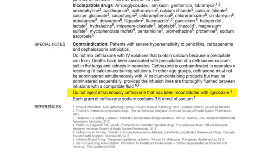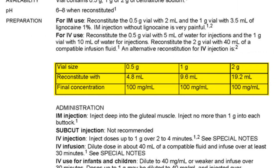In the special notes, there is a warning not to inject the solution made with lignocaine intravenously. For many antibiotics, there is a table listing different reconstitution amounts depending on the dose and concentration you want. For example, a 1 gram dose can be reconstituted with 10 ml of water for injections; however, you can use 9.6 ml to get 100 mg per ml, making it easy to calculate — for a 600 mg dose, you give 6 ml.